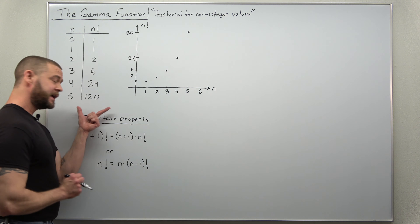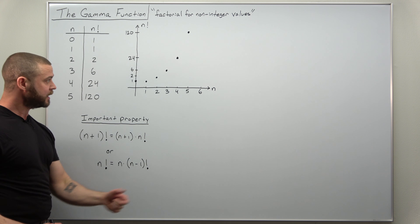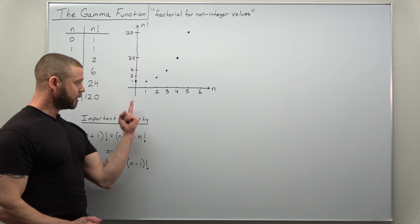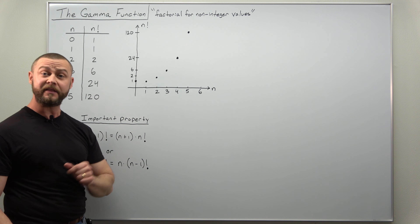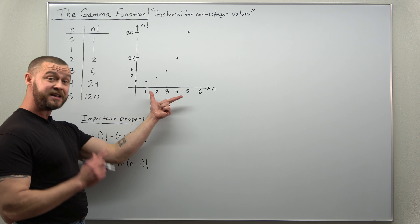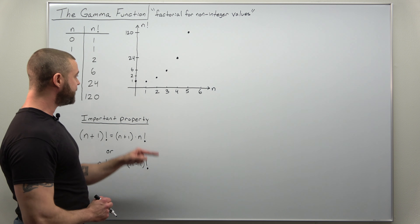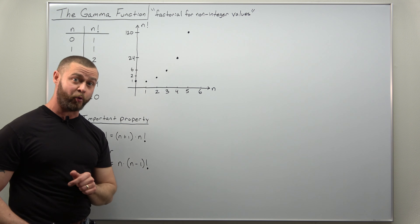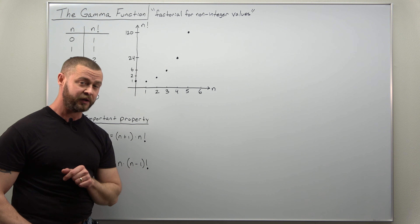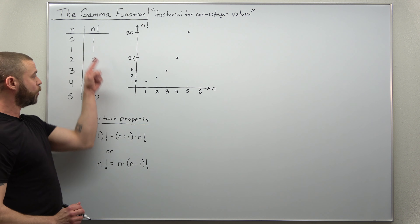Let's go to some basic factorial values here for positive integers. We have them from 0 going up to 5 factorial and they grow rather quickly. If we plot them on our coordinate system, with the x-axis as n and the y-axis as n factorial, we get these set of points. This is the factorial for integer values, and what we want to do is basically interpolate — fit a continuous curve to all these data points.